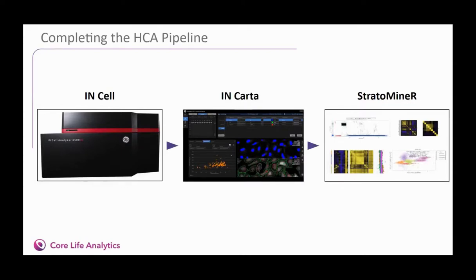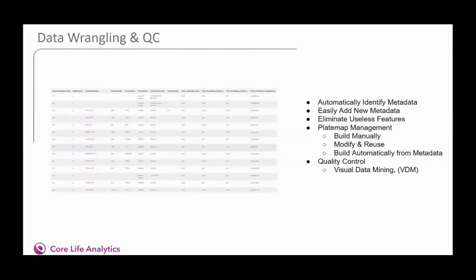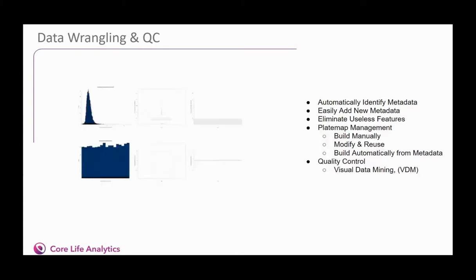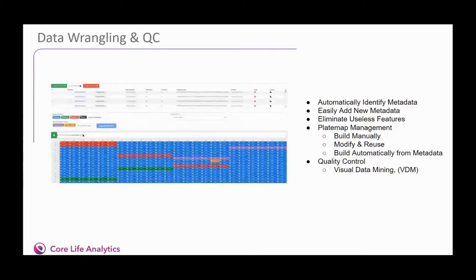The data from Encarta can be loaded directly into Strataminer without any modification — one plate or a hundred plates. The first thing we do is identify what is metadata and what is analytical data. We can also give you an opportunity to merge new metadata with your dataset. Next, we help you to easily remove useless measurements — for example, ones that are uniform across the whole experiment. We have a very powerful module that helps you to build and manage plate maps, which you can copy, modify, and share with your colleagues.